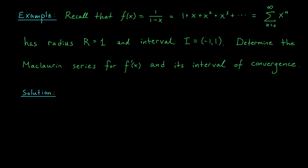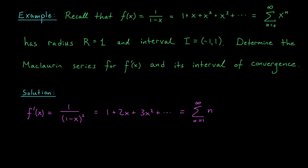Let's begin with an example involving differentiation of power series. We'll start with the function 1 over 1 minus x, which was one of our building block functions. Its Maclaurin series has a radius of convergence of 1, and specifically will converge for x values in the open interval from minus 1 to 1. Suppose we wish to know the Maclaurin series for the derivative of this function, as well as its interval of convergence. We can obtain the Maclaurin series for f prime by differentiating the Maclaurin series for f term by term. So f prime — which is 1 over (1 minus x) squared — has a Maclaurin series equal to the sum from n equals 1 to infinity of n times x to the n minus 1.